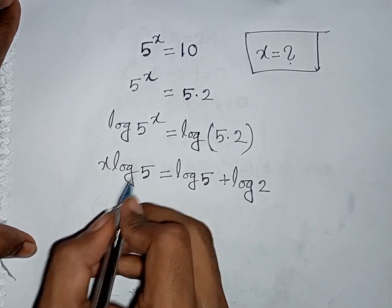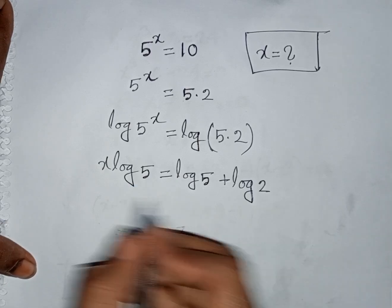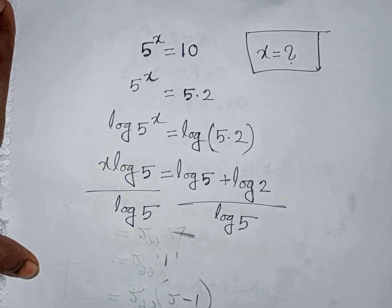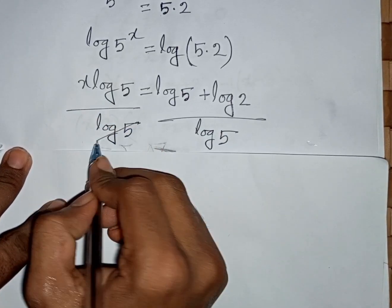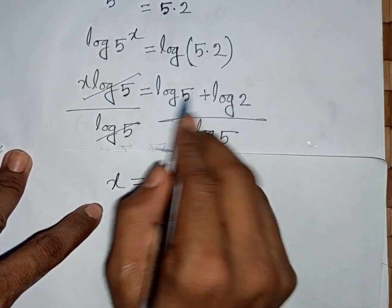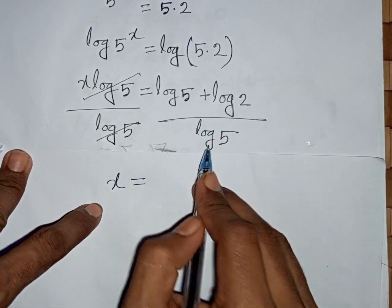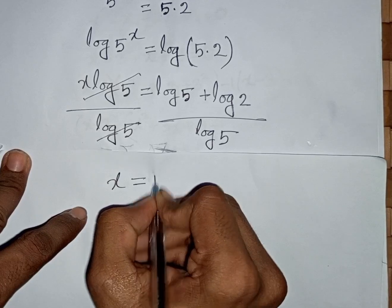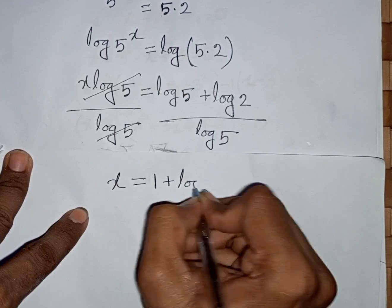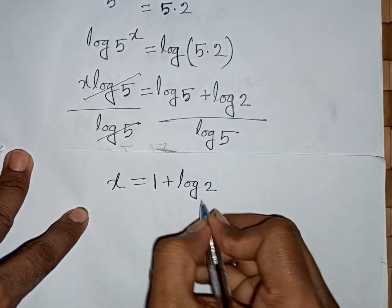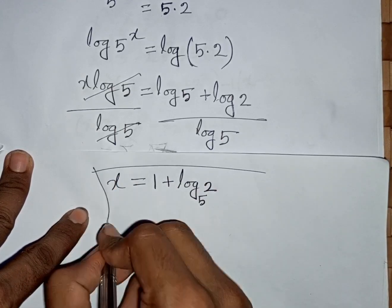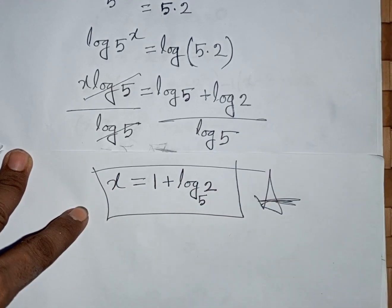Now we need the value of x, so we divide both sides by log5. This log5 and log5 cancel, so x = log5/log5 + log2/log5, which gives x = 1 + log2/log5. That means x = 1 + log base 5 of 2. This is the value of x and our final answer.